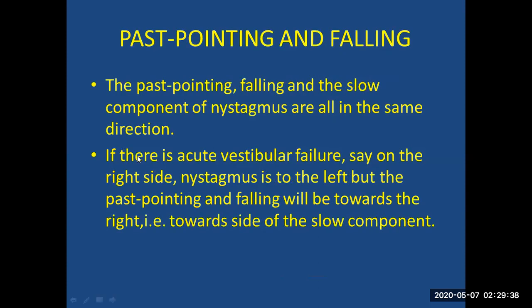Past pointing and falling: The past pointing, falling, and the slow component of the nystagmus are all in the same direction. So if there is acute vestibular failure on the right side, the nystagmus is to the left, but past pointing and falling will be towards the right — that is, toward the slow component. A video demonstrates the patient performing the past pointing maneuver to the examiner's hand with eyes open and then eyes closed.